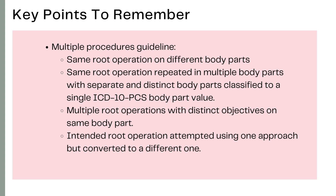The fourth scenario for multiple procedures is when the intended root operation is attempted using one approach but then converted to a different approach — for example, a laparoscopic cholecystectomy converted to an open cholecystectomy. In this case, two codes are required: since the laparoscopic approach was attempted but discontinued, it is coded as Inspection, and the open cholecystectomy is coded as Excision. This is an important ICD-10-PCS guideline for coding multiple procedures.